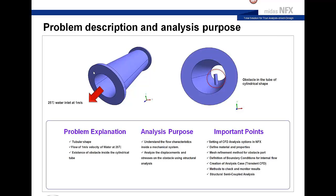The problem description: you have water entering at 25°C at 1 meter per second inlet velocity. Inside the tube there is an obstacle — a cylindrical shape. The goal is to know the impact of this object on the fluid, what pressure the fluid exerts on this object, and what stress it causes — a basic CFD analysis to verify product durability.